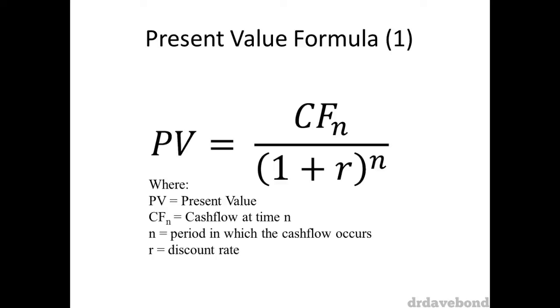First, using the present value formula. The present value formula for a single future cash flow is the cash flow at time n divided by 1 plus the discount rate all to the power of n. n is when the cash flow occurs.